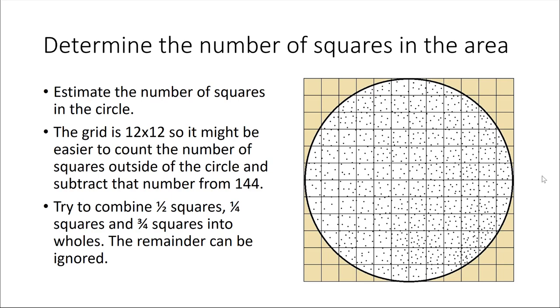Our next task is going to be to figure out how many squares total make up our area of interest. This grid pattern that we used was 12 by 12, so we know that there are 144 squares total.